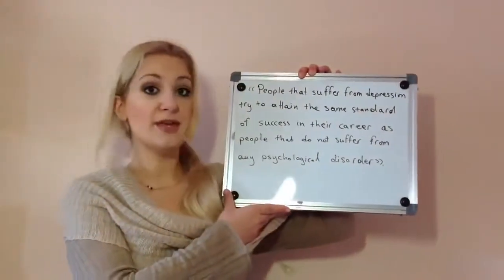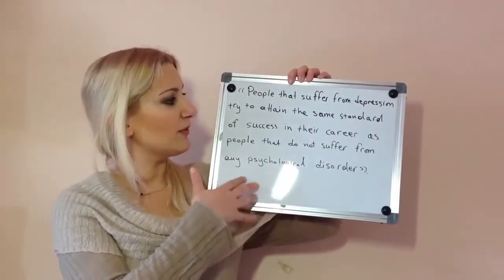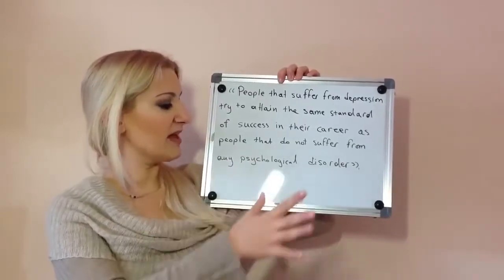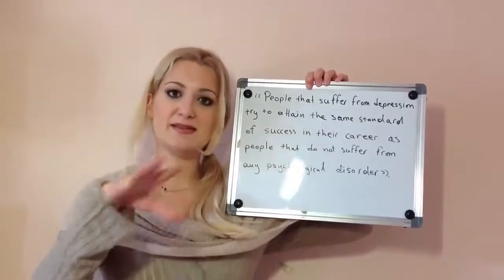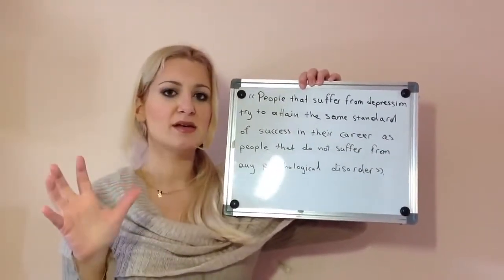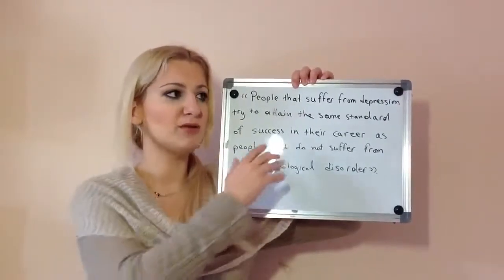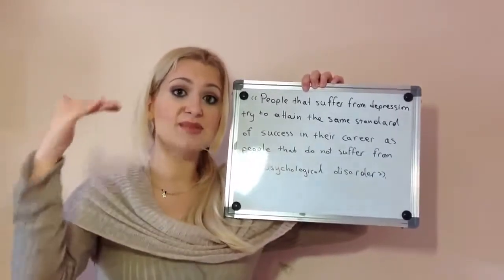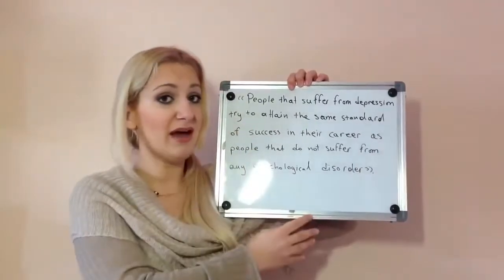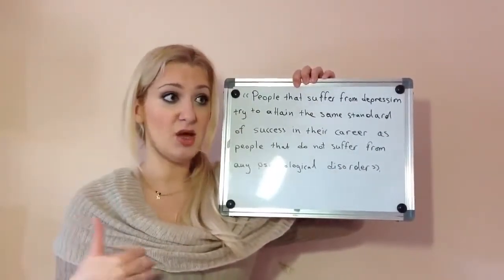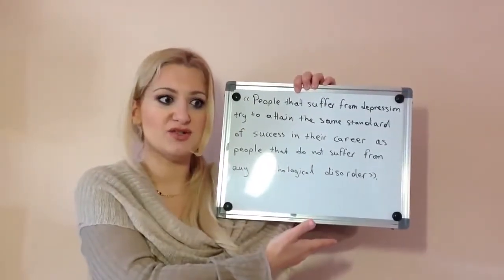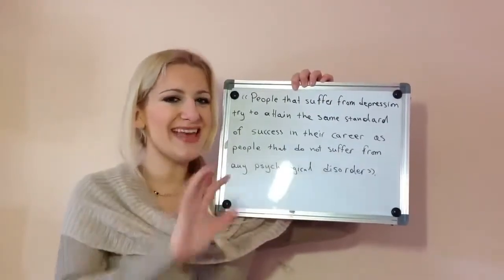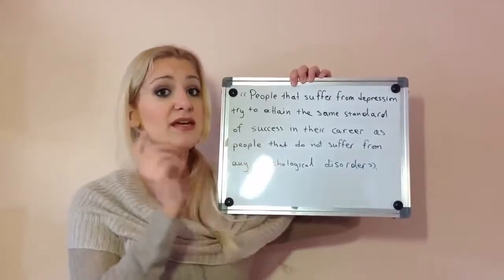Let's look at our example. The statement reads: 'People that suffer from depression try to attain the same standard of success in their career as people that do not suffer from any psychological disorder.' In the text, it is implied all over that people who suffer from depression do not care at all about their success in their career — implied, but never clearly stated. Maybe some people who suffer from depression do want to achieve the same standard as non-depressive people. So it is not stated clearly, and in this case this statement is not given.